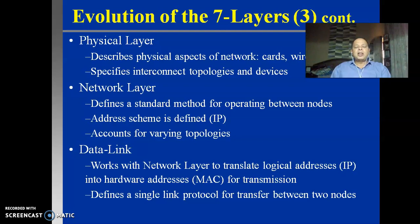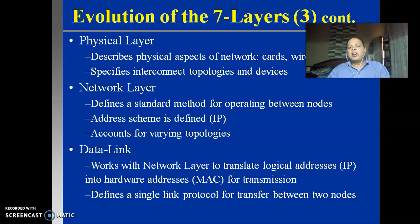The next layer is the data link layer. This data link layer works with the network layer. We have seen that no single layer works in isolation - they have to work with the layer just above or just below it, because it is an inter-process operation. Unless a particular layer works with the layer above and the layer below, the entire communication won't be successful. Therefore, this data link layer works with the network layer to translate logical addresses. The logical address is described by means of numericals - for example, the address could be 127.0.1.2 or 127.16.13.4. This is an address defined by means of numbers.